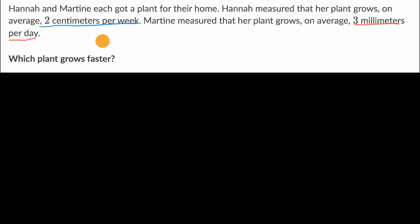So let's convert both of them to centimeters per week. You could try to convert both of them to millimeters per day, or you could try to convert both of them to meters per year with a third set of units. But centimeters per week seems reasonable, since we already have Hannah's plant rate at. So let me write this down. Hannah grows at two centimeters per week. And then you have Martine. Martine grows at an average of three millimeters per day.